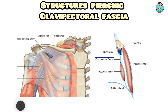This clavipectoral fascia has certain structures which pierce it. These structures are very important from an examination point of view. There is a simple mnemonic which can help you to remember the structures which pierce the clavipectoral fascia, and the mnemonic is CALL.